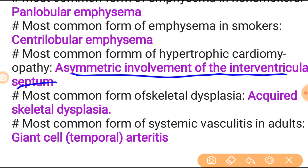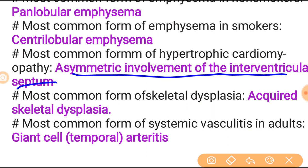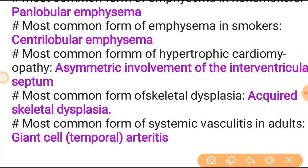Most common form of hypertrophic cardiomyopathy is asymmetric involvement of the interventricular septum. Most common feature of heart transplant indication is dilated hypertrophic cardiomyopathy - the most important feature for transplantation. Most common form of skeletal dysplasia is acquired skeletal dysplasia. Most common form of systemic vasculitis in the adult is giant cell temporal arteritis - most important topic.